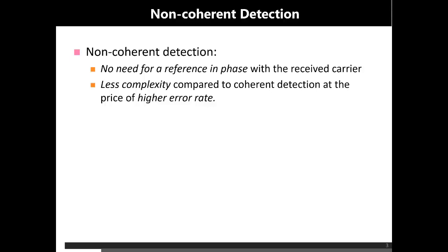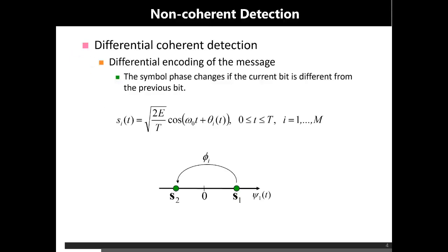Due to this reason, non-coherent detection is relatively less computationally extensive compared to coherent detection, but definitely at a price of higher bit error rate. There are many types of non-coherent detection schemes for different modulation schemes, but one of the famous types is differential phase shift keying.